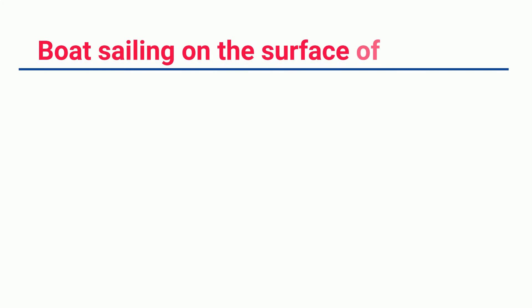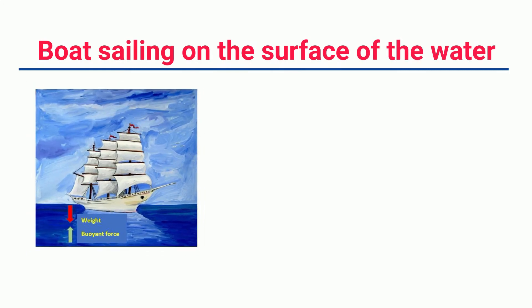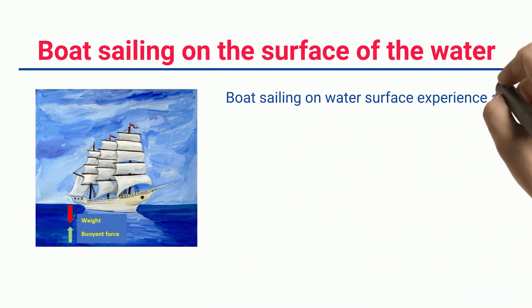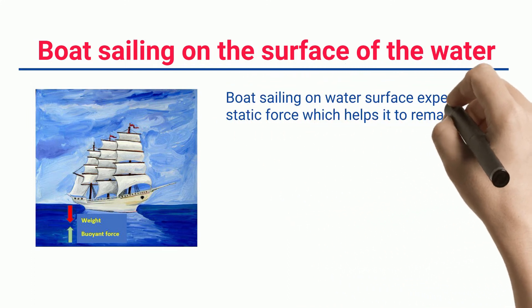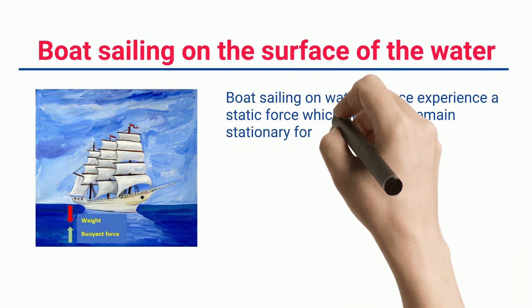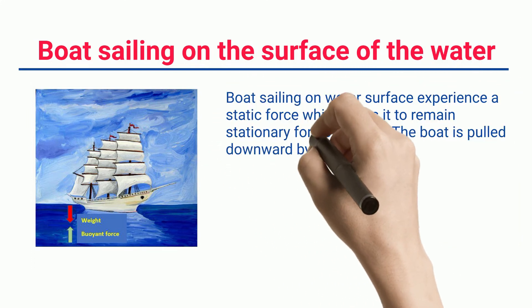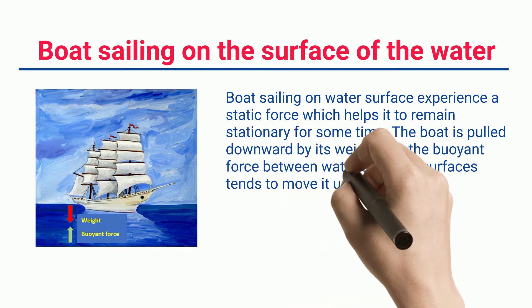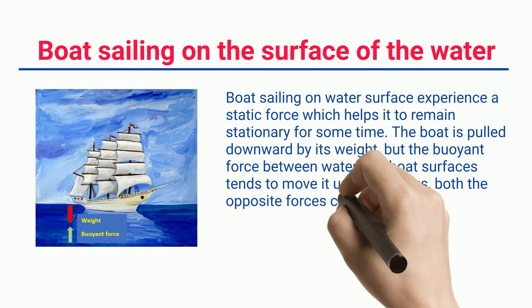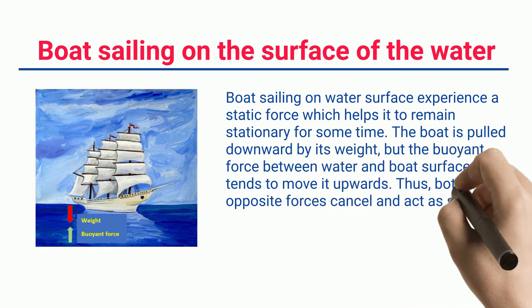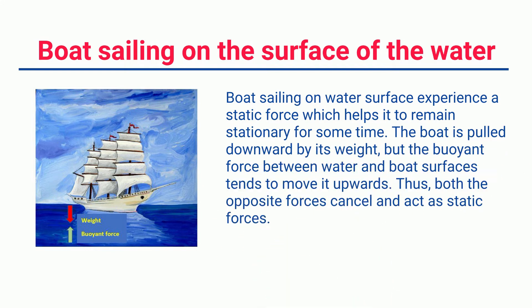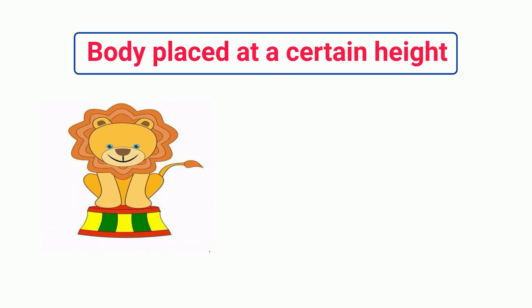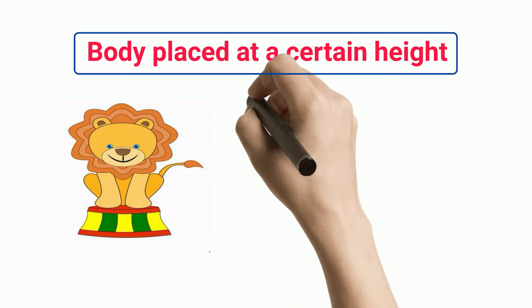A boat sailing on the water surface experiences a static force which helps it remain stationary for some time. The boat is pulled downward by its weight, but the buoyant force between the water and boat surfaces tends to move it upwards. Thus both opposite forces cancel and act as static forces.